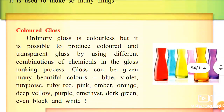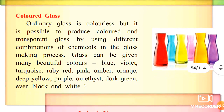Ordinary glass is colorless. However, with different combinations of chemicals in the glass-making process, we can produce different colors — orange, deep yellow, purple, dark green, even black and white.